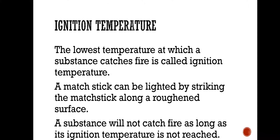The matchstick attains the ignition temperature and catches fire. The wood attached to the matchstick is made of a special wood that burns at that temperature only when it catches fire. That is why the matchstick can be lighted by striking it along a roughened surface — rubbing is necessary for the matchstick to be lighted.